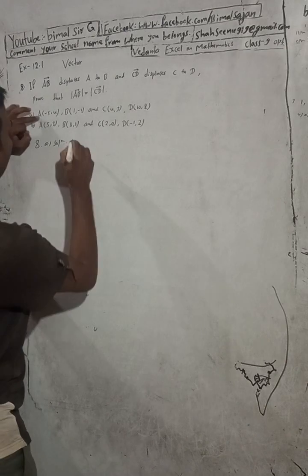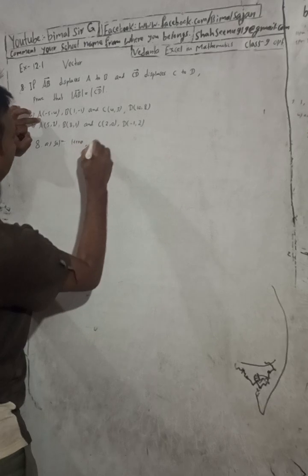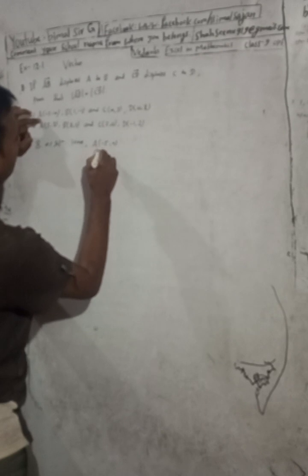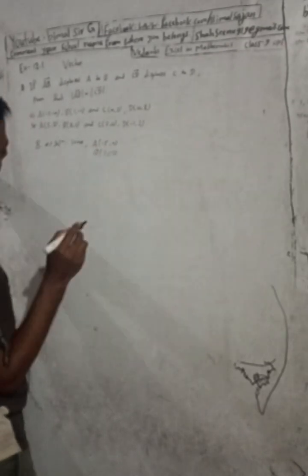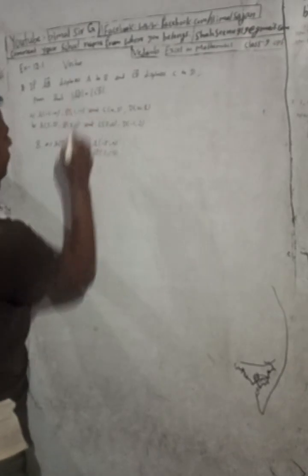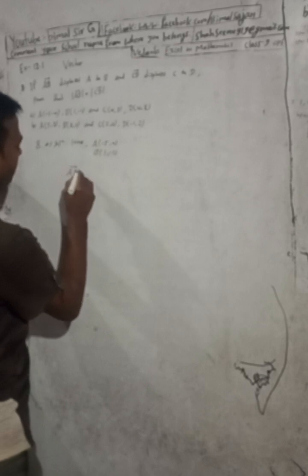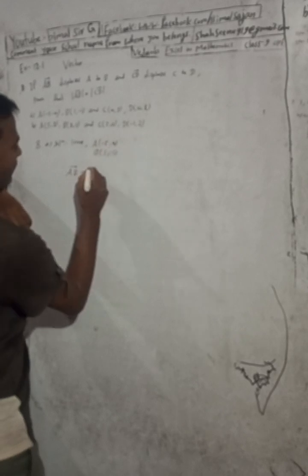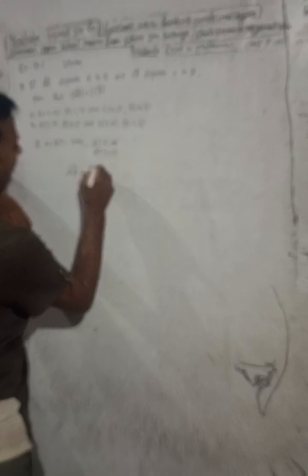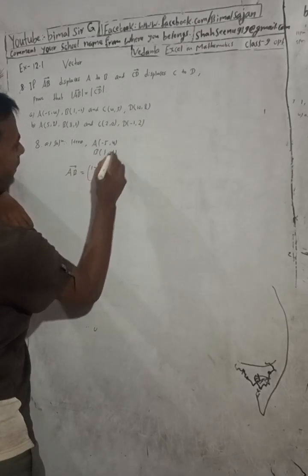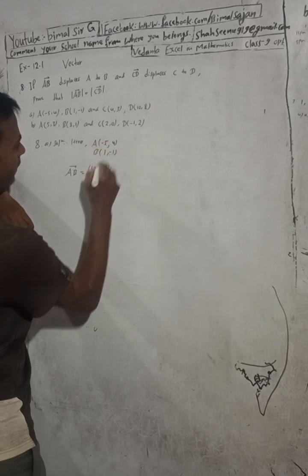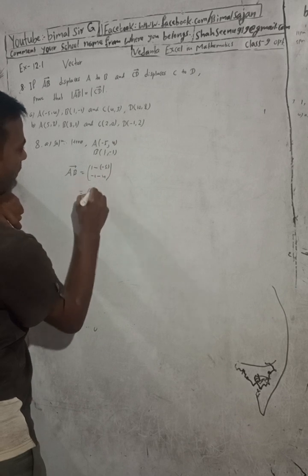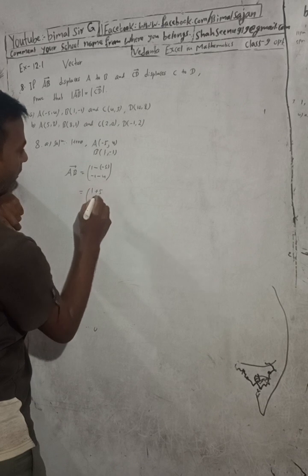So first of all, we have A = (-5, 4) and B = (1, -1). We need to find AB vector. AB vector is equal to (1 - (-5)) and (-1 - 4), so this is 1 + 5 = 6, and -1 - 4 = -5. So AB vector is (6, -5).